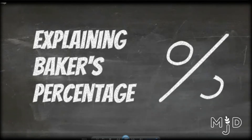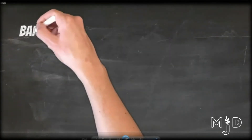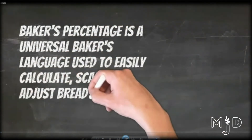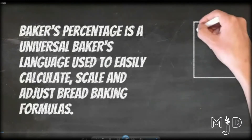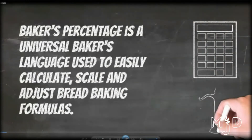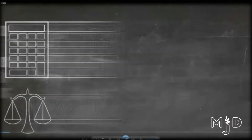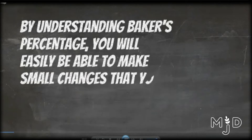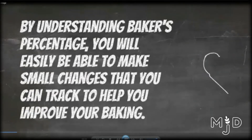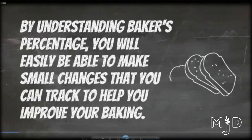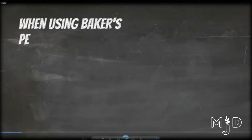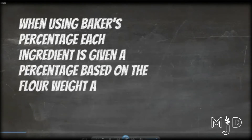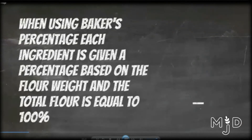We're going to talk about baker's percentage: what it is, how to use it, and how to calculate it. Essentially, baker's percentage is a universal baker's language used to calculate, scale, and adjust bread baking formulas. It's really going to help you become a better baker by understanding some fundamentals. By understanding baker's percentage, you'll be easily able to make small changes that you can track to improve your baking, and you'll also be able to do cool things like inclusions. When using baker's percentage, each ingredient is given a percentage based on the flour weight, and the total flour is equal to 100%.